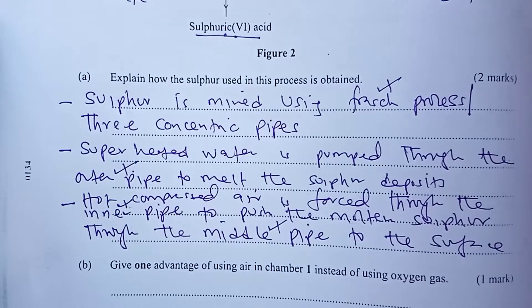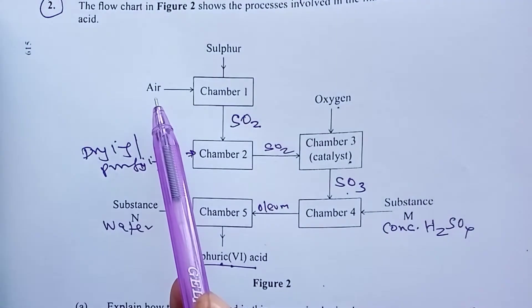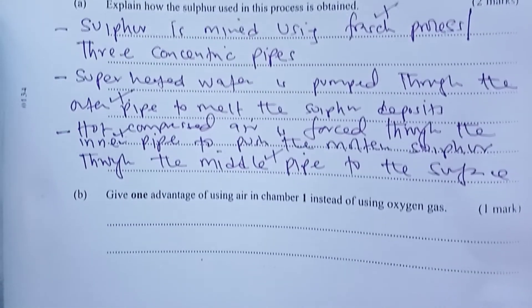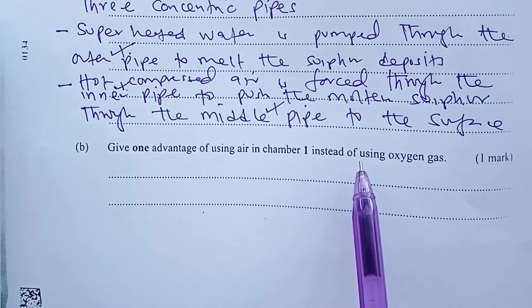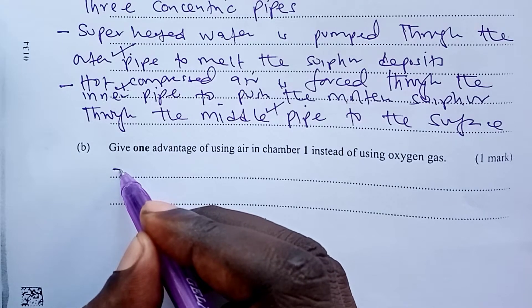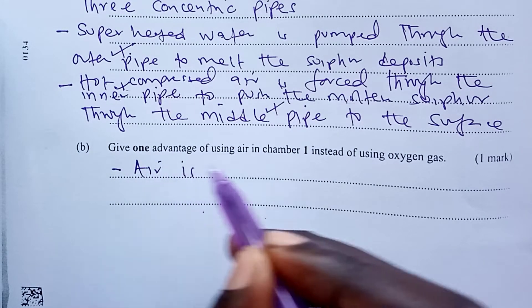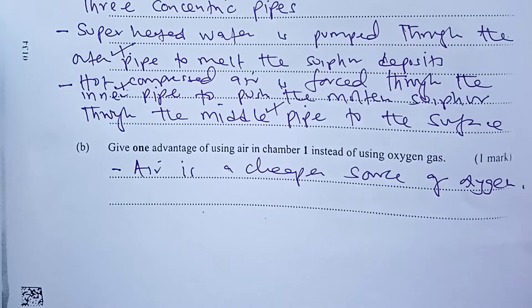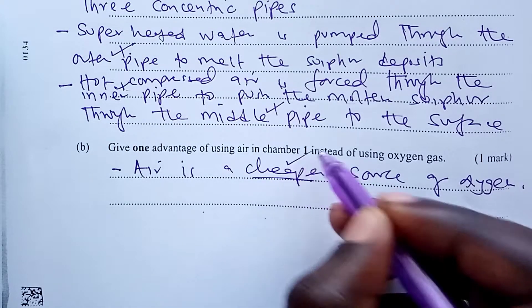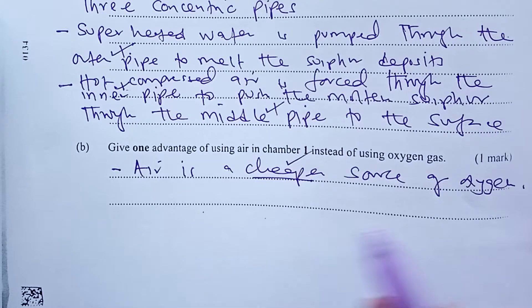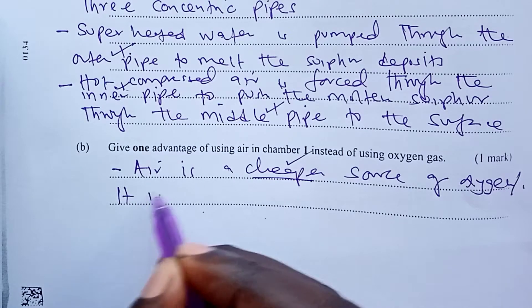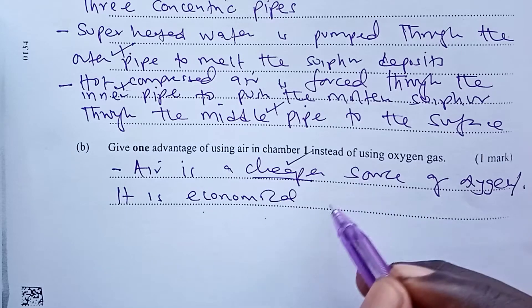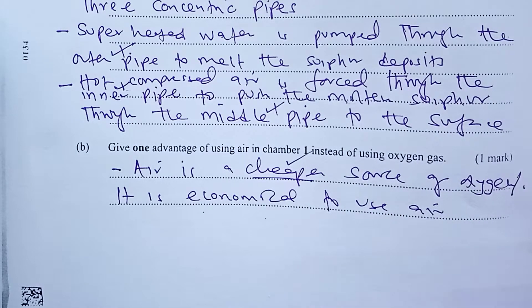Moving on — we have seen that in chamber 1 we are bringing in air. The question asks: give one advantage of using air in chamber 1 instead of oxygen gas. The answer is that air is a cheaper source of oxygen, for one mark. An alternative would be to write that it is economical to use air as opposed to oxygen — that would also be good enough for the one mark.